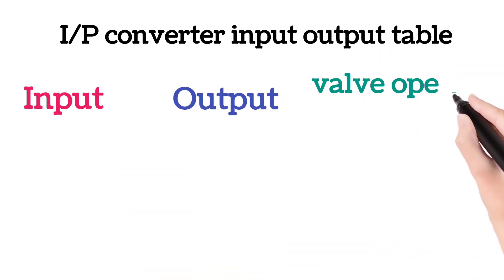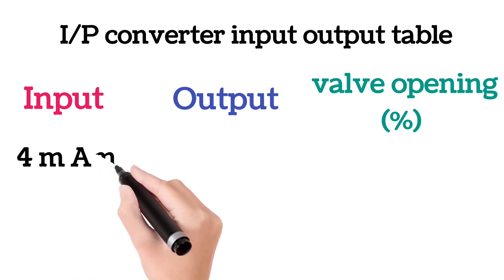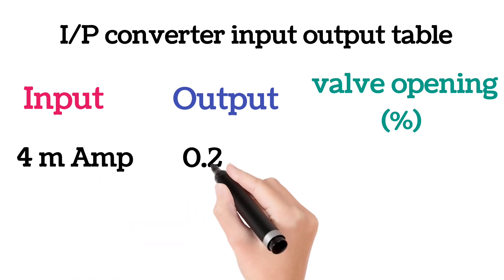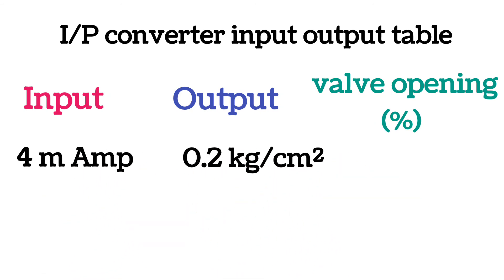Now we will see input and output table for an I to P converter. At 4 milliamp signal, the output of I to P converter is 0.2 kg per square centimeter and the control valve opening will be 0%.